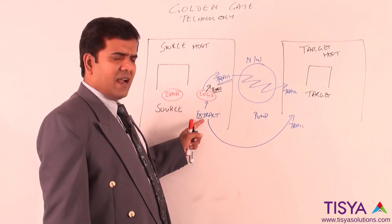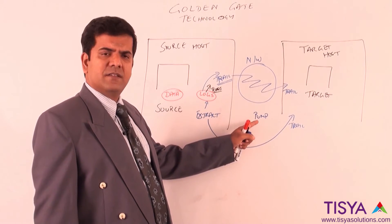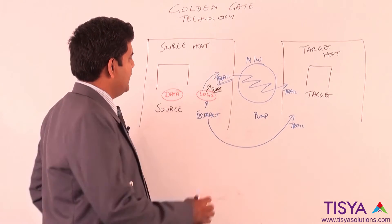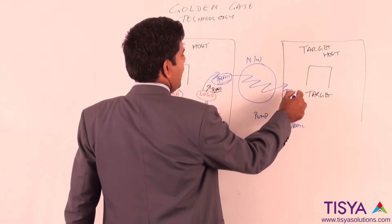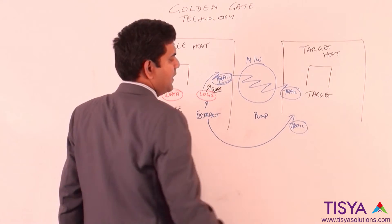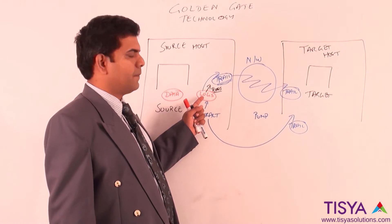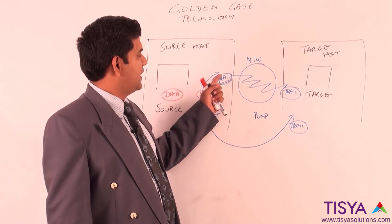Extract is a process, pump is a process while trail are files that are created with the transaction log data that is extracted.